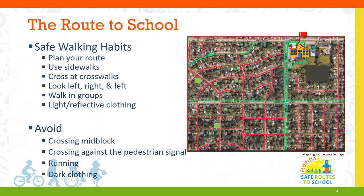Creating a walking route to school can help encourage safe walking habits for walking leaders and students. Let's take a look at this map. This is a gridded neighborhood with easy access to the school, which is at the top right of the map. The green lines represent sidewalks and the red lines represent no sidewalks present. The green boxes represent walking school bus stops to pick up students, and the intersections circled have crosswalks and crossing guards.